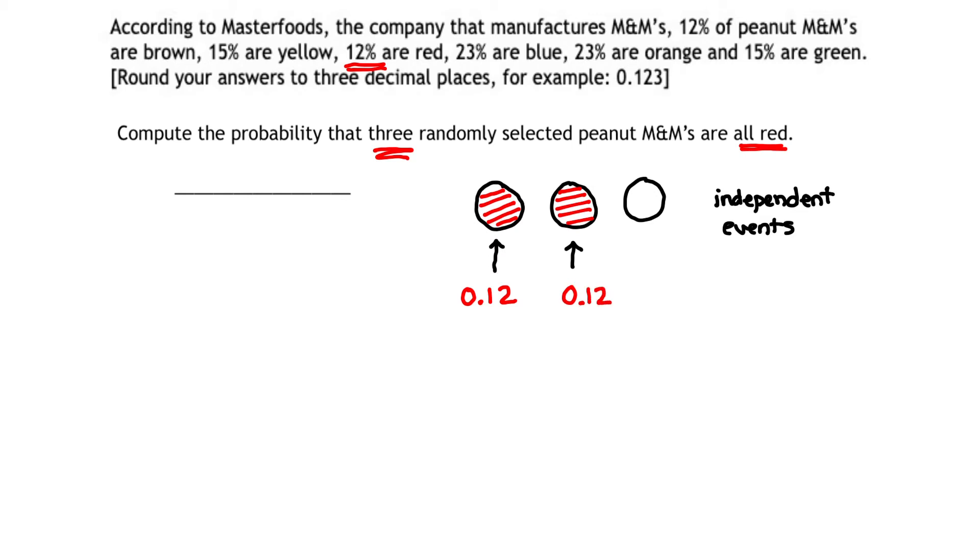And finally, we get that third choice, or that third M&M. What is the probability that that M&M is red? Well, that M&M being red has a probability of the same as the other ones, which is 12% or 0.12.